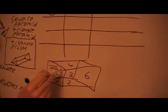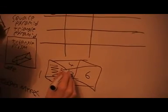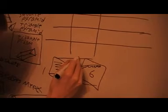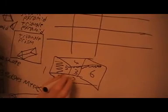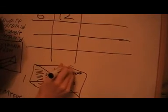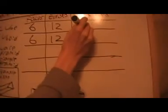A cube has edges as well. It's got four edges on the top and another four edges on the bottom, so that's eight. And there are two on this side and two on that side — so that's twelve edges altogether. A cuboid is also going to have twelve edges. The vertices are the corners: one, two, three, four, five, six, seven, eight — eight vertices.